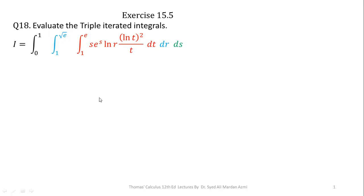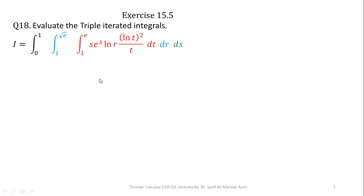Before start solving this question number 18, first of all we must know some basic terminologies related to triple integrals. In triple integrals, we have three variables involved and three integrals involved. The limits are 0 to 1, 0 to square root of e (e is the exponential function), and 1 to e. We have to integrate s·e raised to power s, natural log of r, natural log of t whole square over t, with respect to dt, dr, and ds.